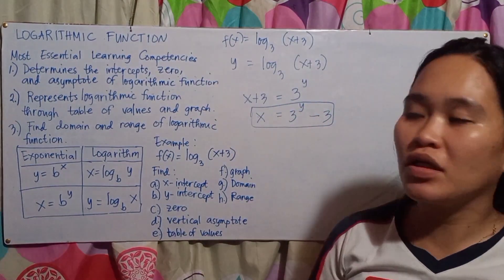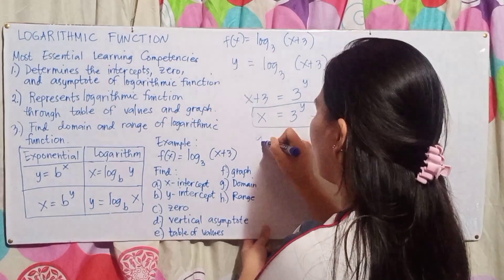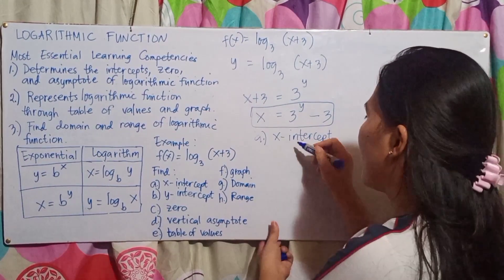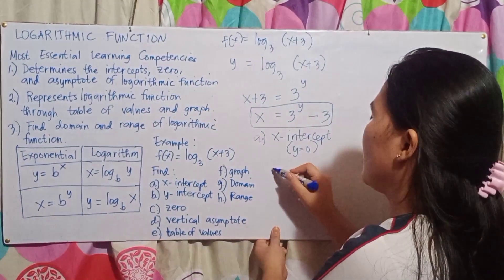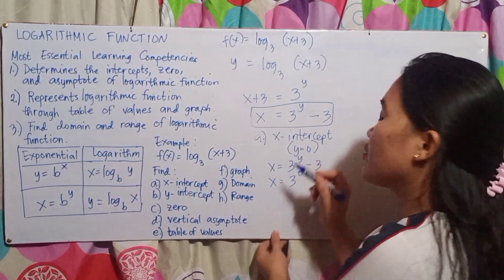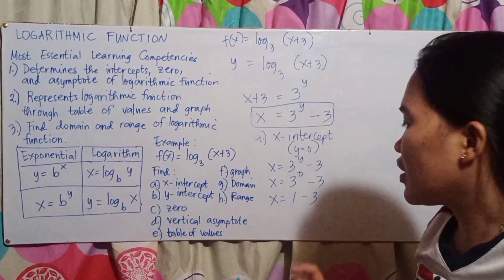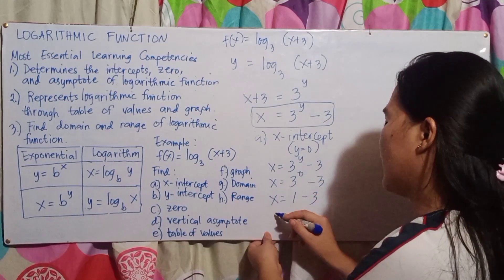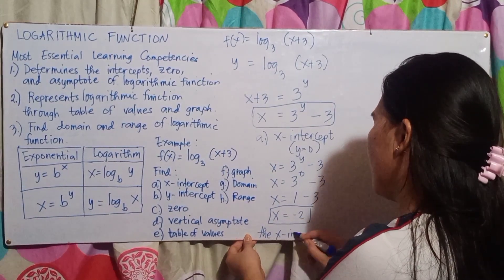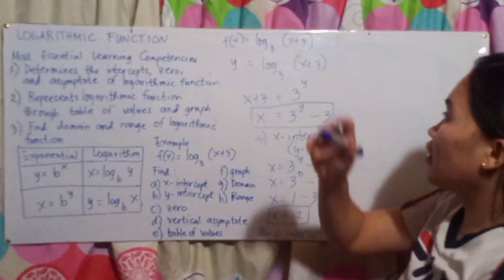Now in exponential form: x equals 3 raised to the power of y minus 3. To solve for the x-intercept, let y equal 0. So x equals 3 raised to the power of 0 minus 3. Any number raised to the power of 0 equals 1, so x equals 1 minus 3, which gives x equals negative 2. Therefore, the x-intercept is negative 2.